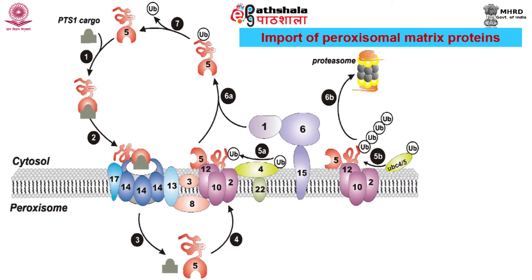The receptors are exported from the peroxisome matrix back to the membrane. The receptors are either mono-ubiquitinated on a cysteine by pex 4 and pex 2 for receptor cycling, or they are poly-ubiquitinated on a lysine by UBC 4/5 and pex 10/12. The mono-ubiquitinated receptors are recycled, whereas poly-ubiquitinated ones would go for degradation by the radar pathway. The receptor is deubiquitinated before the next round of import.